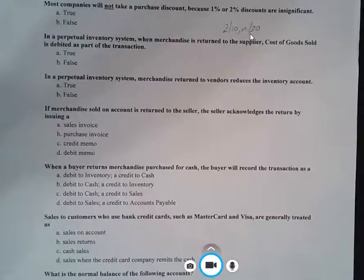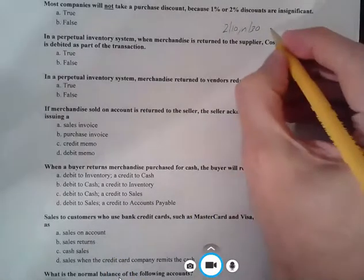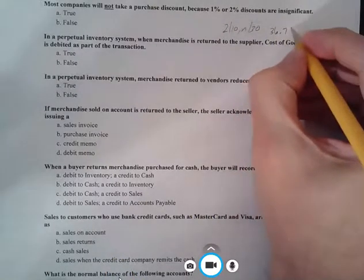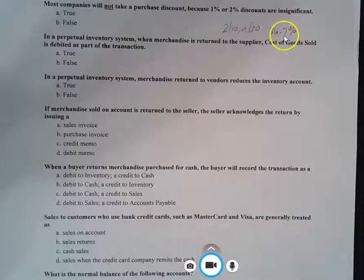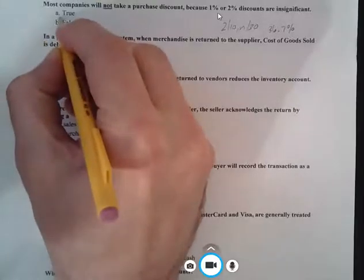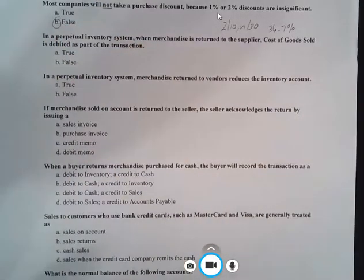We calculated not taking this discount as effectively paying interest to the vendor at a percentage of, I believe it was 36.7% interest, which is sky high. So we definitely want to do that. So if a 2% discount is 36.7%, well, 1% would be about 18.3, 18.4%, and that's very, very high too. So this is absolutely, positively a false statement.